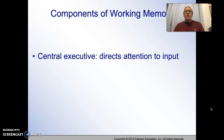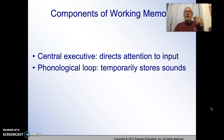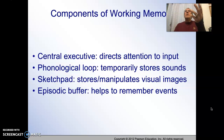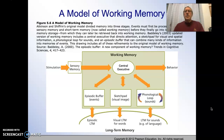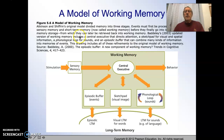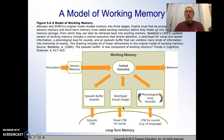We actually have a central executive — a function that directs our attention to the input we're looking at. It temporarily stores sounds or visions and works on that information. As shown in this diagram, which I believe is in your textbook, the central executive takes sensory information and works with it in an episodic buffer, a sketch pad, or a loop, and then that helps put it into long-term memory.